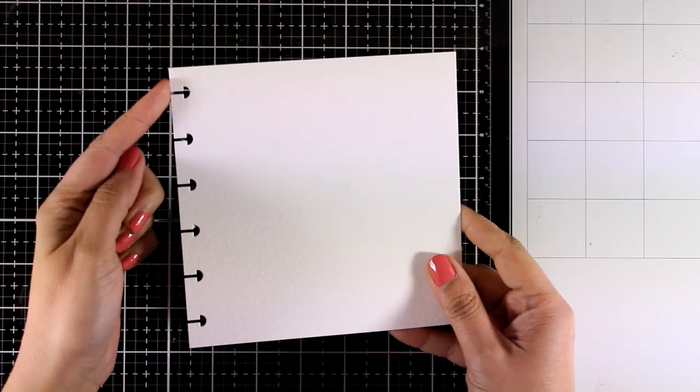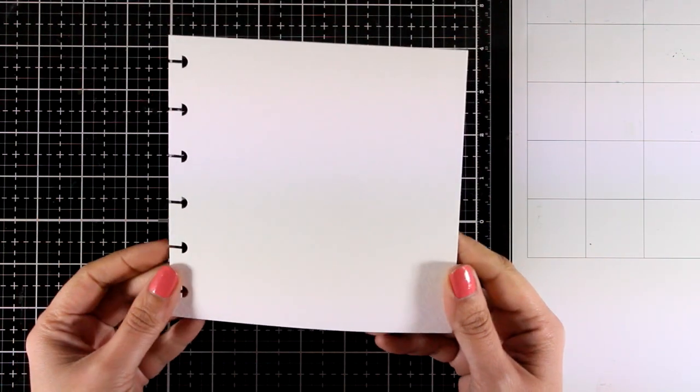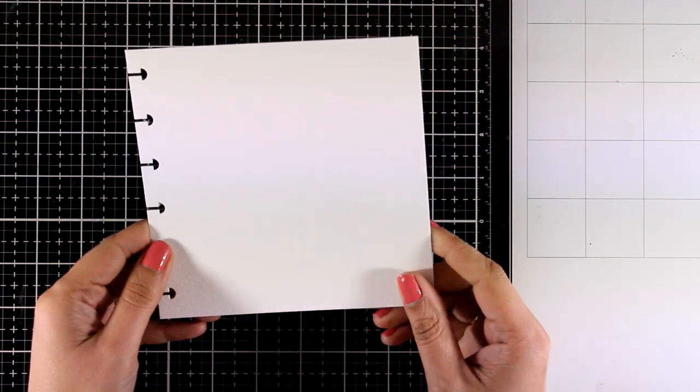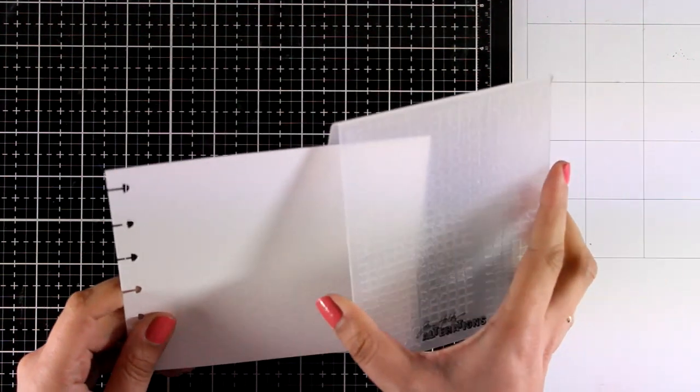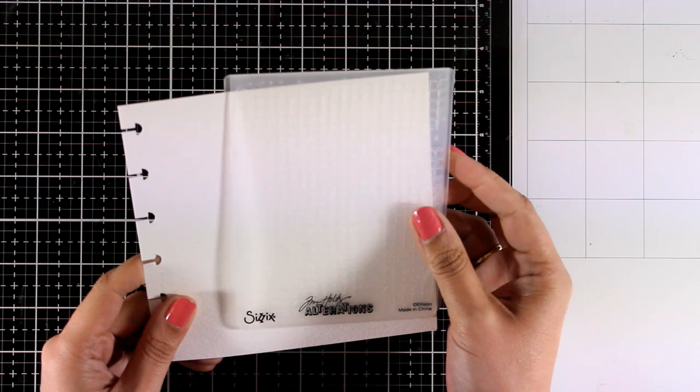Hi, it's Vicky here today and I'm happy to guest design for Simon Says Stamp. Today I'm going to work on my 6x6 disc-bound journal. This is watercolor paper and it gives me the freedom to do more techniques than I would do on a regular art journal book.